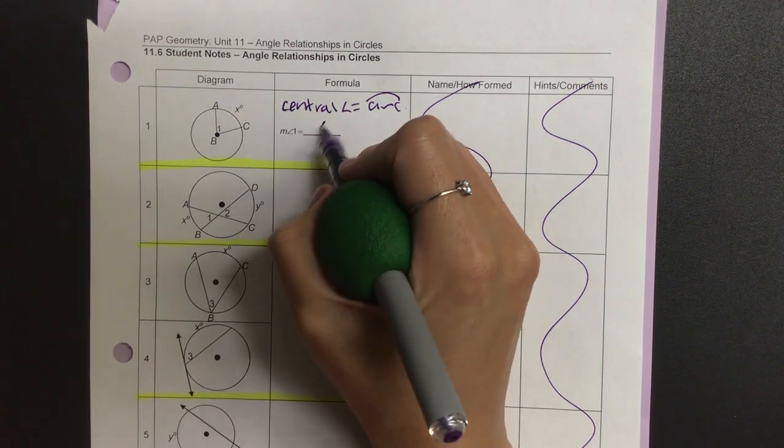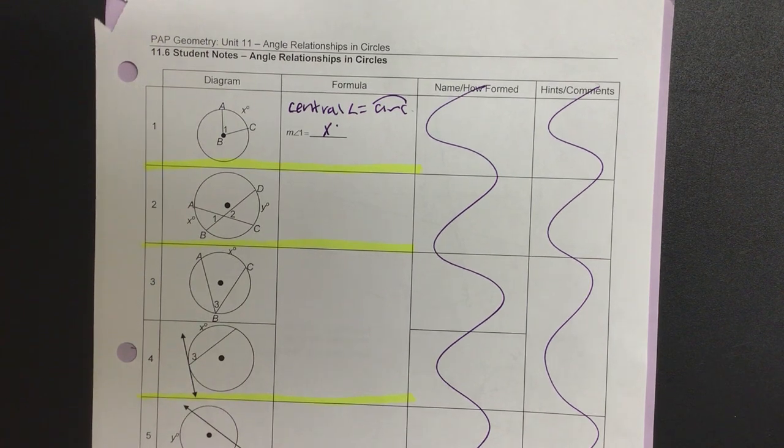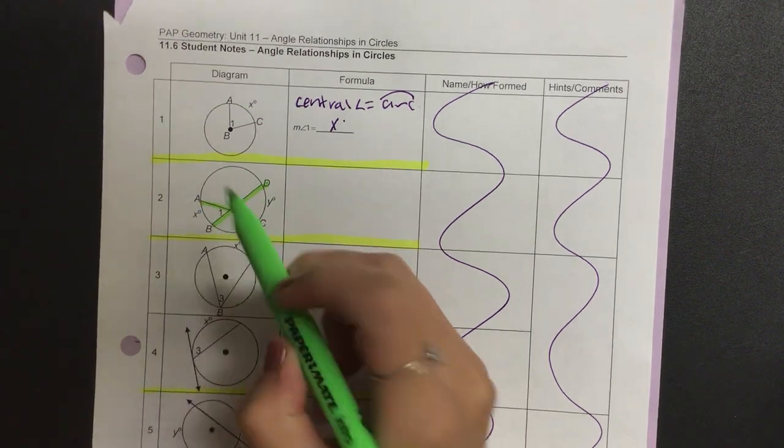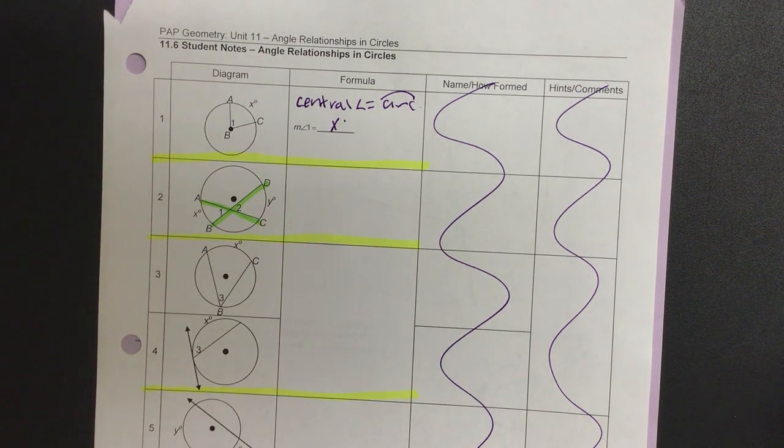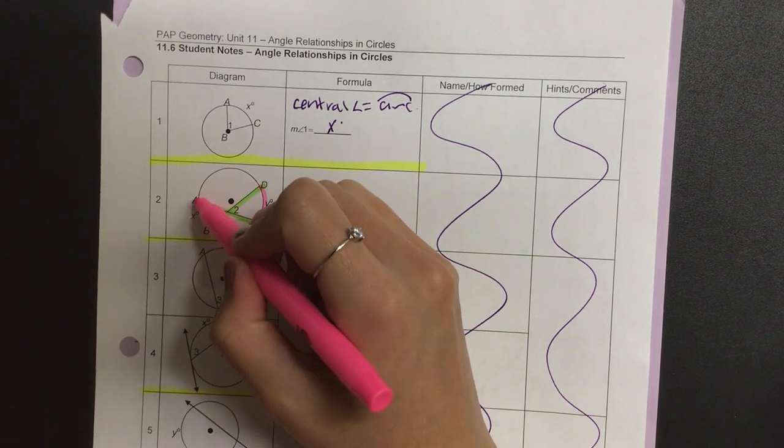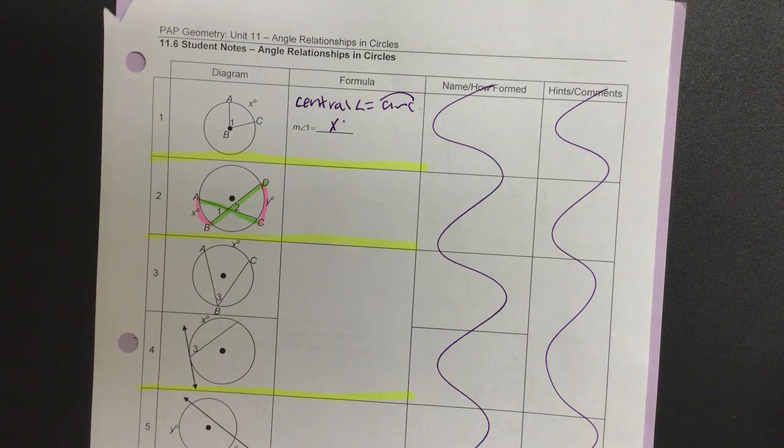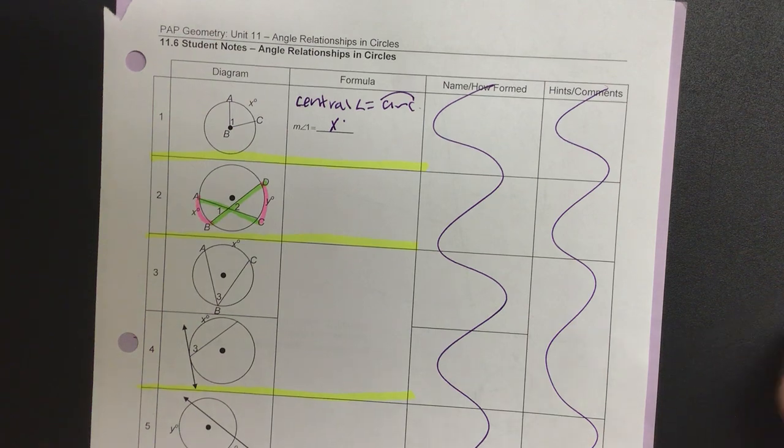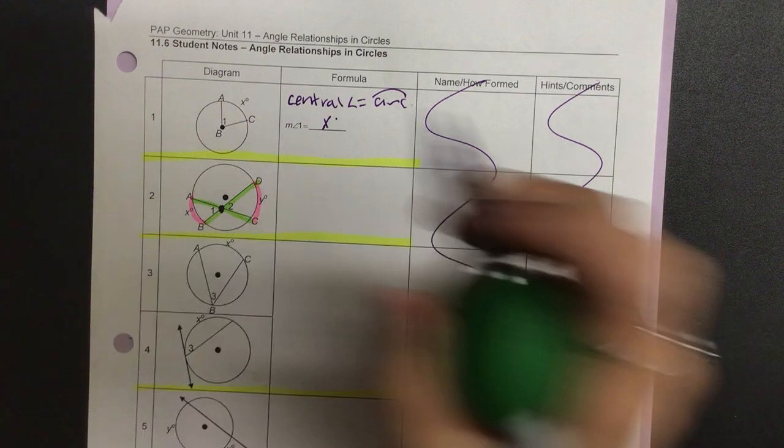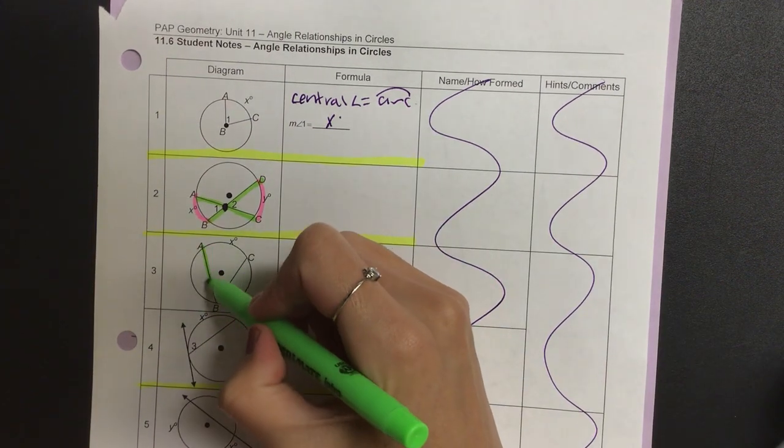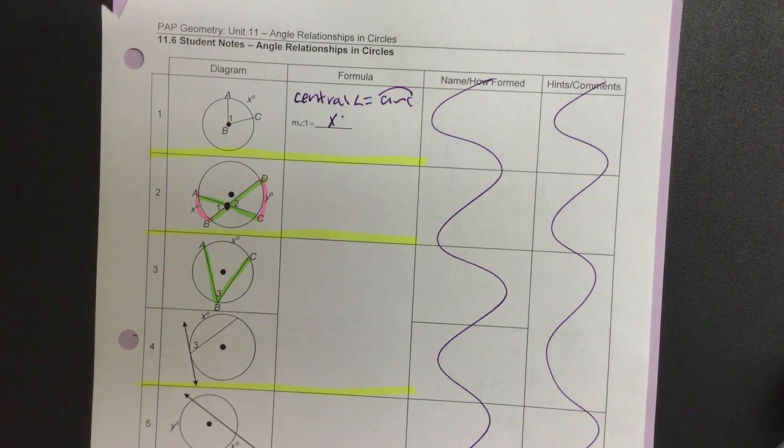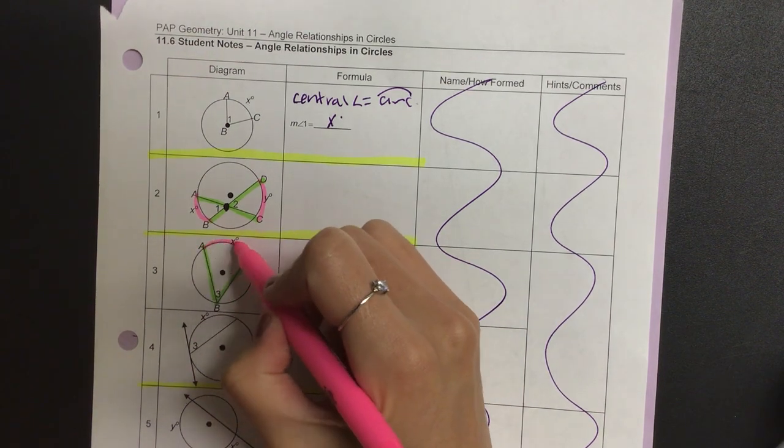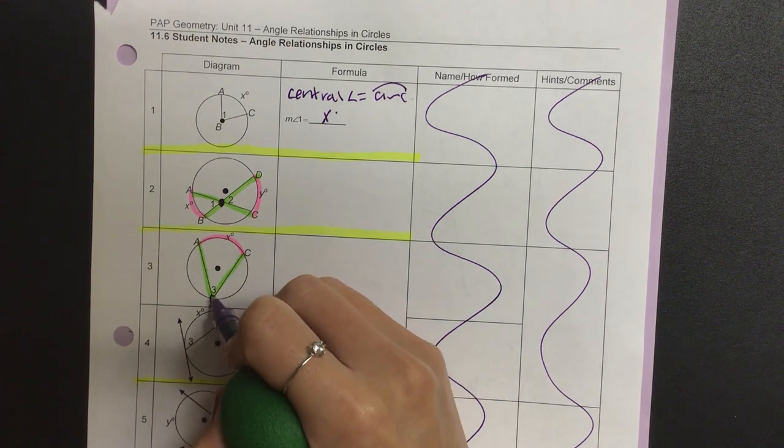For number two, it's a little bit different. Is that a central angle? Let's go highlight the two chords. So here's chord one, here's chord two, and also highlight the inner inscribed or intercepted arc. And then I want you to put a dot at the intersection. Same thing on the other chord AB and chord BC, and the intercepted arc. Put a dot.